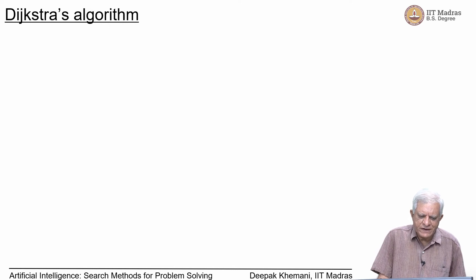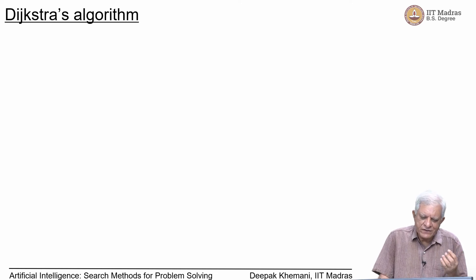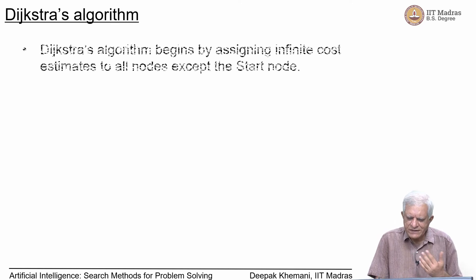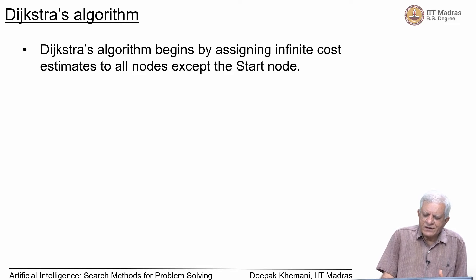Here we have Dijkstra's algorithm — a very well known algorithm. The only difference between what we are trying to do and what Dijkstra's algorithm is designed for is that Dijkstra's says: given a source node, find the shortest paths to all other nodes. We are interested only in a particular goal node, but in this example it turns out you end up visiting the entire state space anyway.